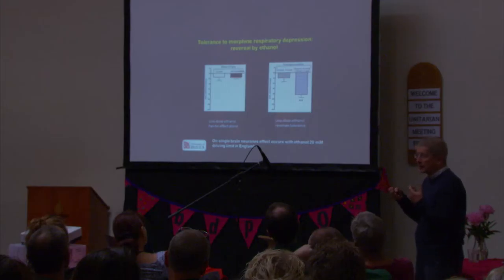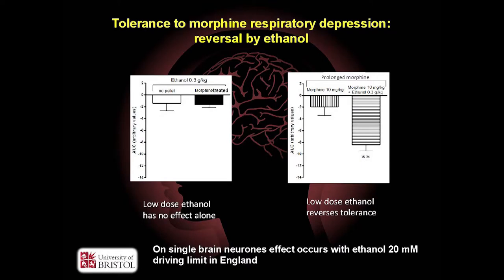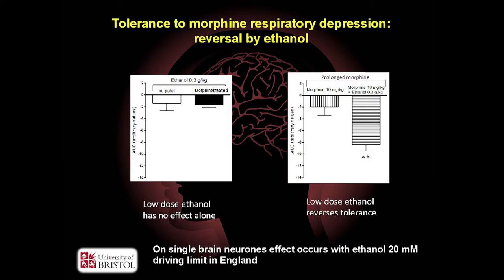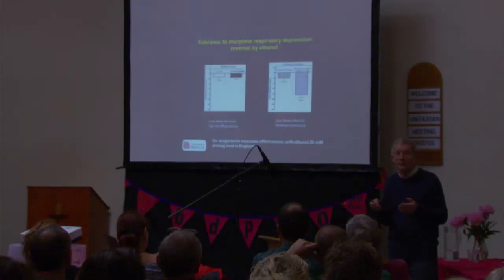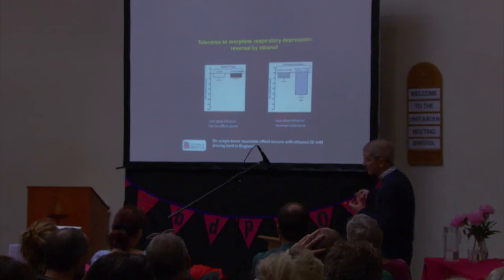We then wanted to know what an acute dose of alcohol would do. We chose a very low dose — one that doesn't in itself depress respiration — so there's no way we get an additive effect because there's no effect to add on to. In our tolerance animals pre-treated with prolonged morphine, we were getting no respiratory depression. But if we gave them just one very low dose of alcohol five minutes before the morphine challenge, the respiration depression came back — all the way to the same level seen in completely naive animals. So a single very low dose of alcohol reverses morphine tolerance and brings respiratory depression back.